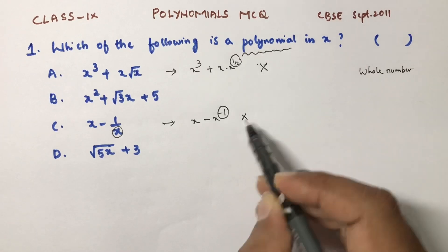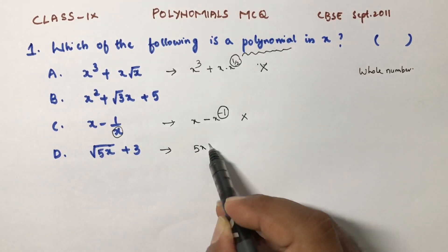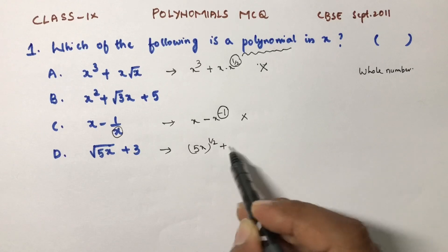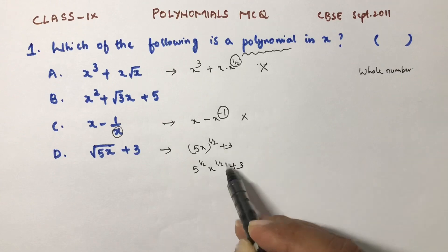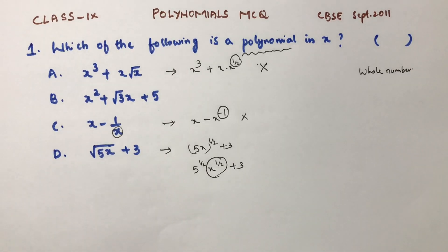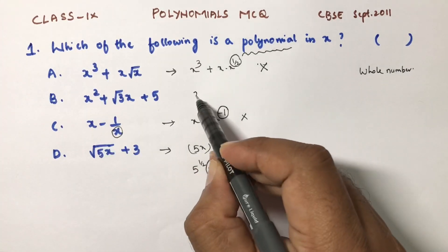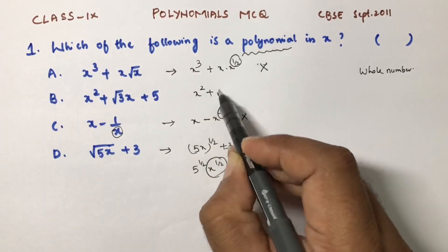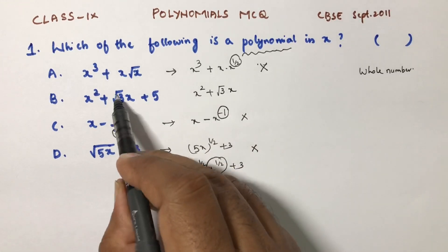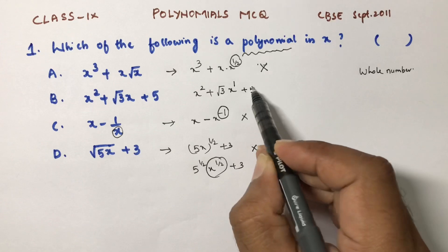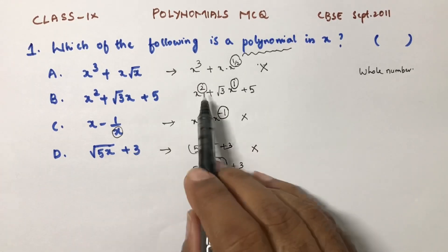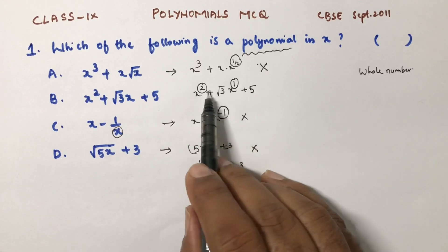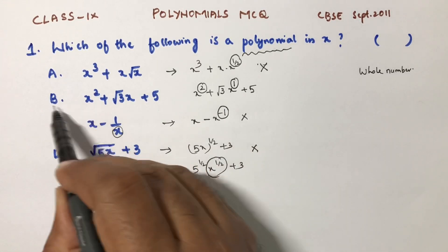Now check 5x^(1/2) + 3: the power of the variable is 1/2, not a whole number, so this is also not a polynomial. Now see this one: x² + √3·x + 5. Here the root is only for 3, not for x. The powers of the variables are 2 and 1, both whole numbers. Therefore this is a polynomial. The correct option is B.